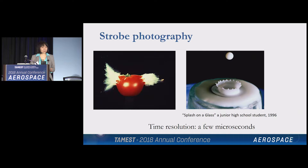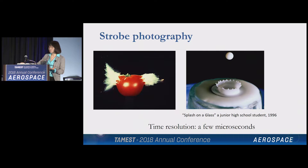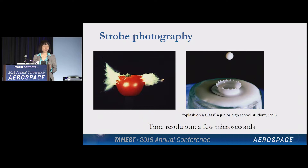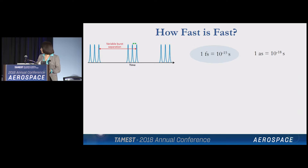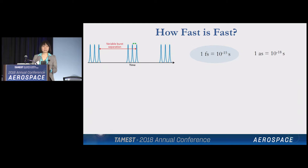How do we see these electrons? How do we manipulate them? From daily experience, to see a fast process you need a faster camera. Here are some examples of images captured using fast cameras with shutter speeds on the order of a few microseconds — a bullet shooting through a tomato, a drop of milk falling into a glass. But this timescale, milliseconds, is still way too slow to watch electrons in materials. So what we use is a series of ultrafast laser pulses.